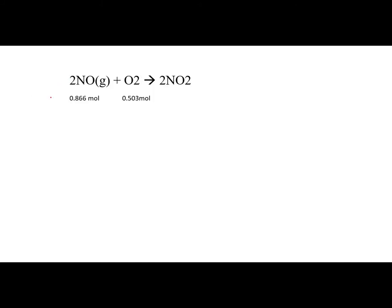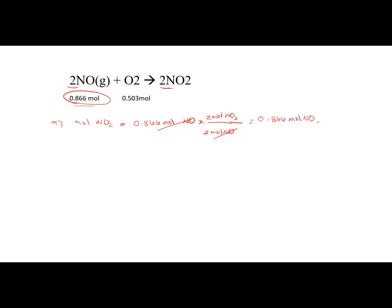In order to get the amount of NO₂ produced, we need to use the moles of NO and O₂. First, moles of NO₂ using nitric oxide: we have 0.866 moles of NO times, from the balanced equation, in every 2 moles of NO we have 2 moles of NO₂ produced. Cancel out moles of NO — 2 divided by 2 is 1 — so therefore we have 0.866 moles of NO₂.